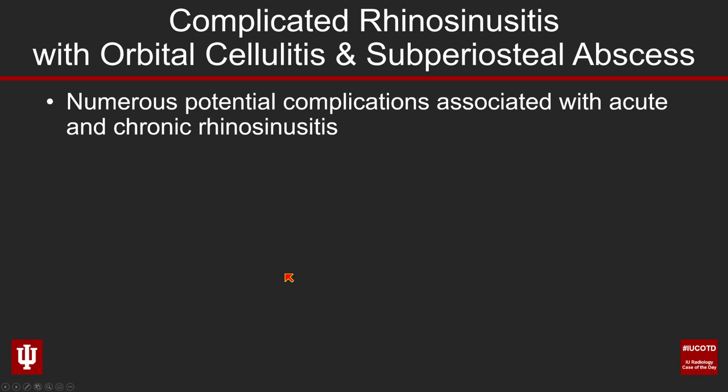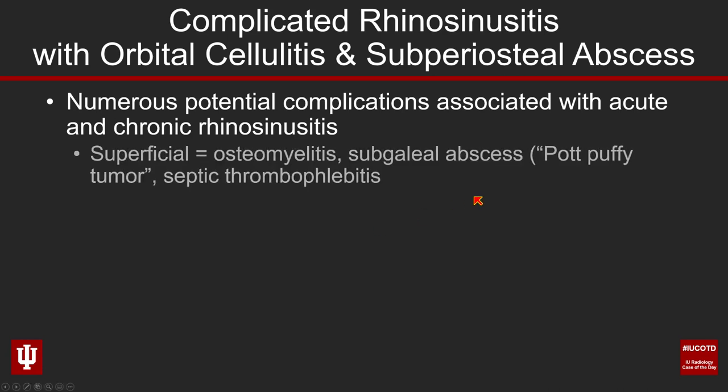The diagnosis is a child with complicated rhinosinusitis who has developed orbital cellulitis and a subperiosteal abscess as complications of sinus disease. There are many potential complications associated with both acute and chronic rhinosinusitis. These can be broken into three broad categories: superficial complications including osteomyelitis, subgaleal abscess, the so-called Pott's puffy tumor where a sinus under pressure produces an extracranial subgaleal rim-enhancing pus collection, and septic thrombophlebitis.